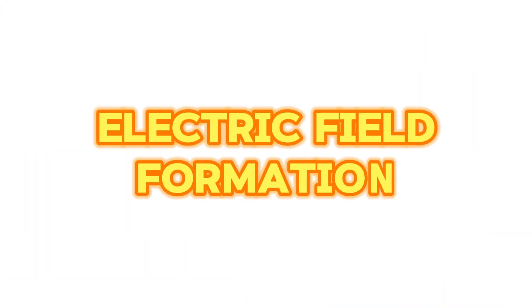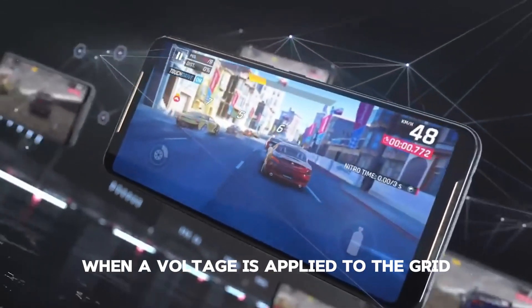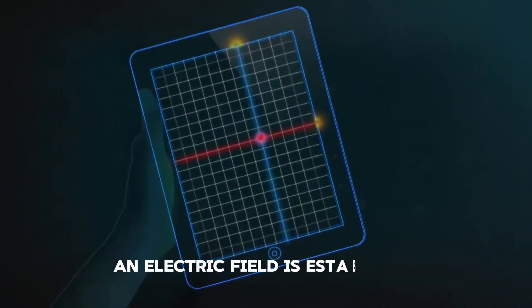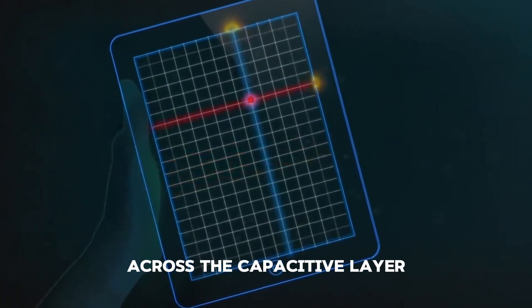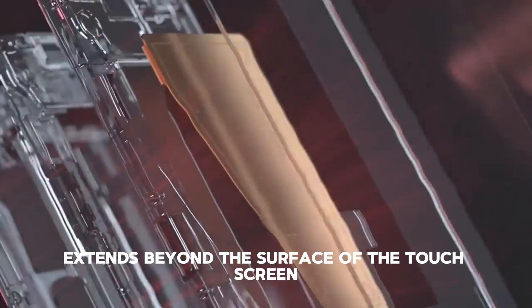Electric field formation. When a voltage is applied to the grid, an electric field is established across the capacitive layer. This electric field extends beyond the surface of the touchscreen.